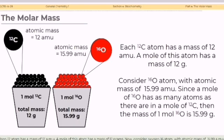Each carbon-12 atom has a mass of 12 amu. A mole of this atom has a mass of 12 grams. Now, consider oxygen-16 atom with atomic mass of 15.99 amu. Since a mole of oxygen-16 has as many atoms as there are in a mole of carbon-12, then the mass of 1 mole oxygen-16 is equivalent to 15.99 grams.